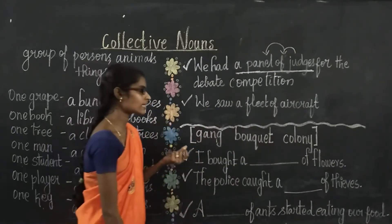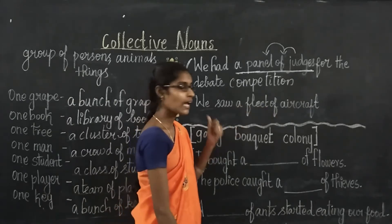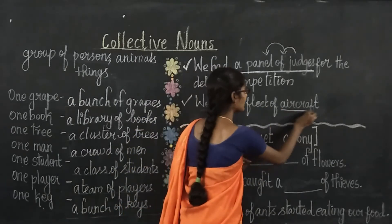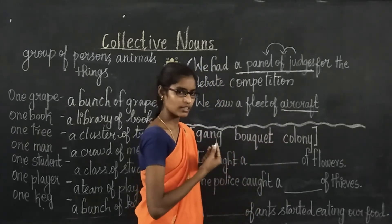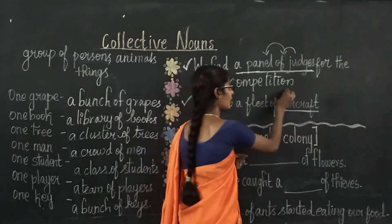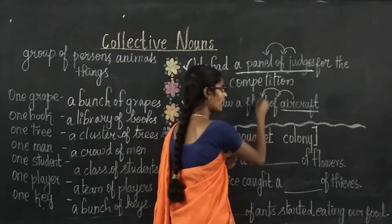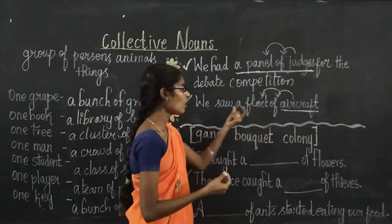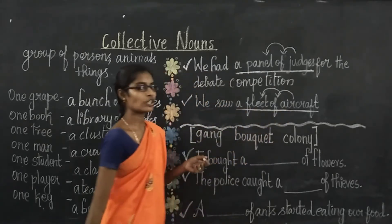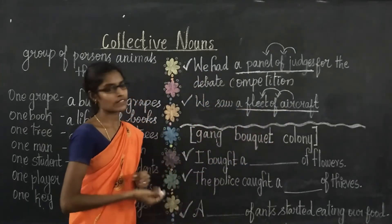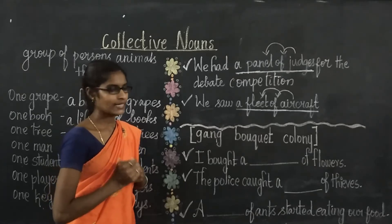Look at the second sentence: 'We saw a fleet of aircraft.' Here, 'aircraft' is a noun. Before 'aircraft' we have 'of,' and before 'of' we have the group name 'fleet.' So 'a fleet of aircraft' is the collective noun in the second sentence. Are you clear now?